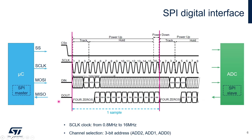The last signal is data out. It starts with four zeros, and then contains the 12-bit data from the ADC converter, which will be received by the microcontroller for digital processing with software.